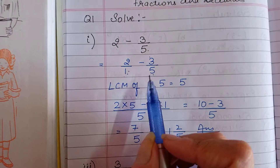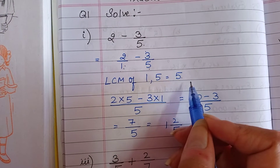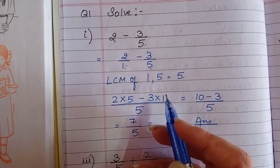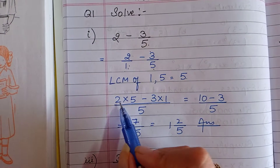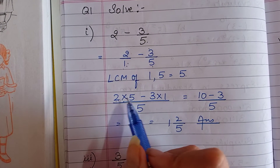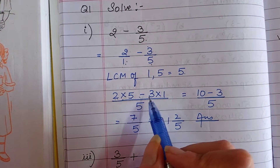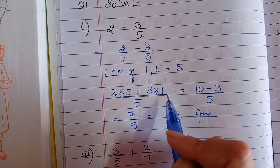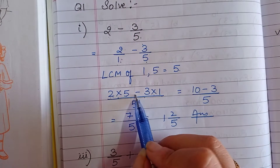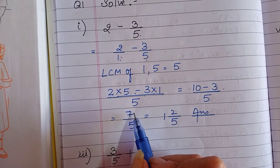Now we will find the LCM of the denominators. The denominators are 1 and 5, so the LCM will be 5. Make a common denominator for both fractions. Write the numerator of the first fraction — in the table of 1, 5 comes at the 5th position, so write 2 multiplied by 5. Then put the subtraction sign, and the numerator of the second fraction — in the table of 5, 5 comes at the 1st position. So the fraction becomes: 2 fives are 10, minus 3 ones are 3. Simply subtract to get 7 upon 5.